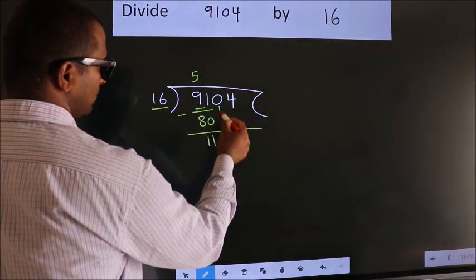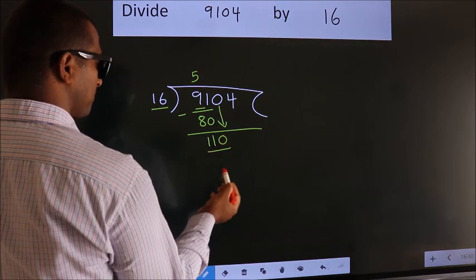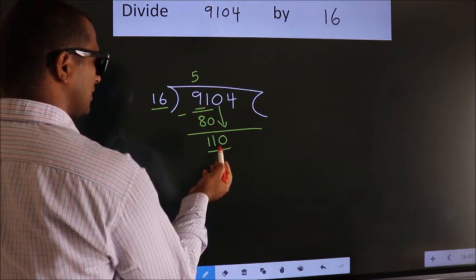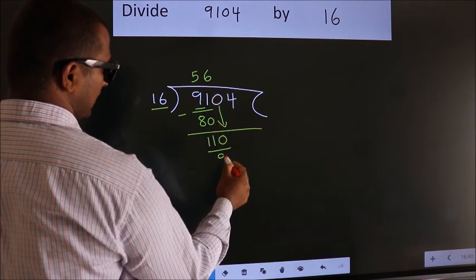After this, bring down the beside number. So, 0 down. So, 110. A number close to 110 in the 16 table is 16 sixes, 96.